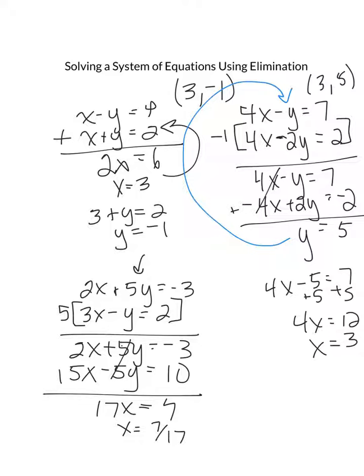When you substitute x in to this top equation here and solve for y, you're going to get y's value is negative 13 seventeenths.